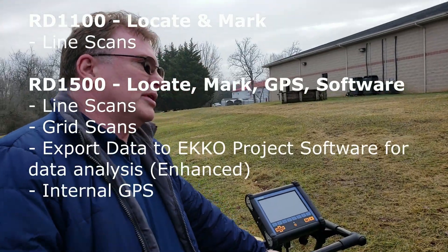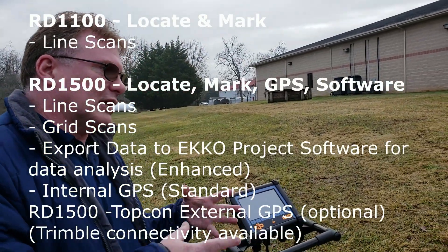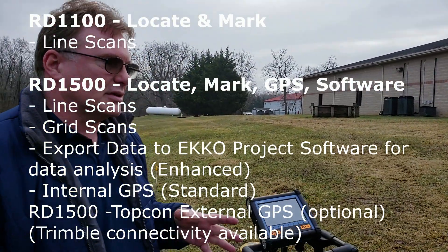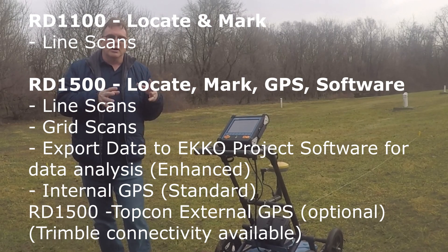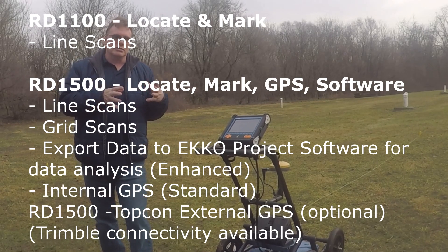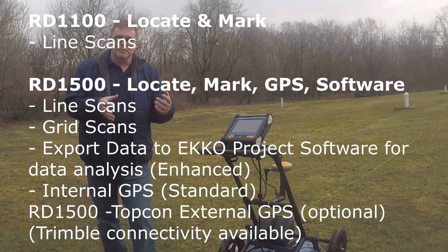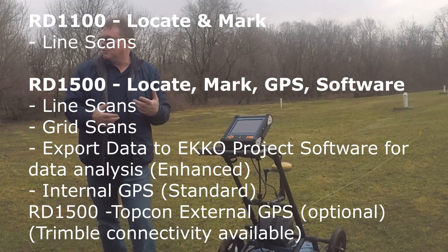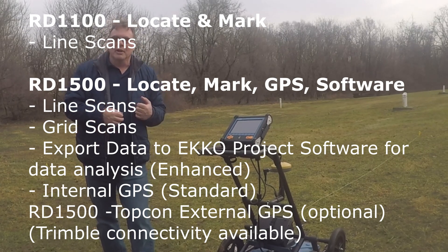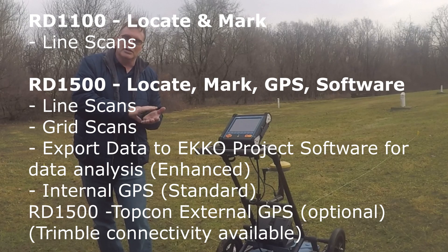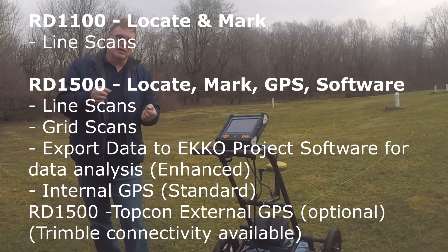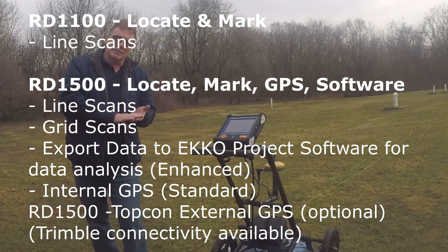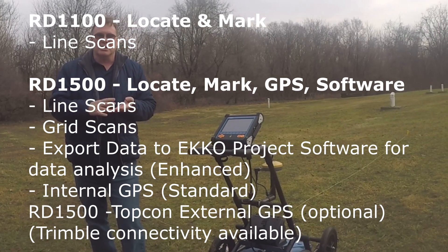This unit is a 1500. The difference between the RD 1100 and the RD 1500 is the 1100 is basically a locate and mark device — it produces line scans and you can go out there and put paint, put marks on the ground. The 1500 is a much more robust device in that it does line scans and grid scans as well.